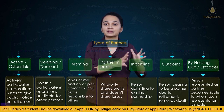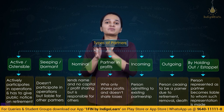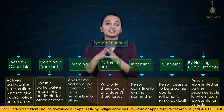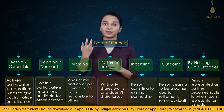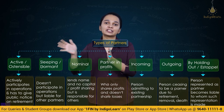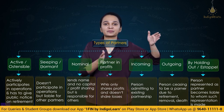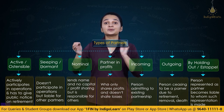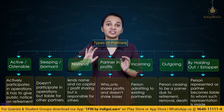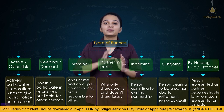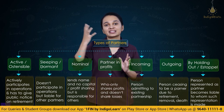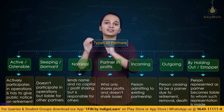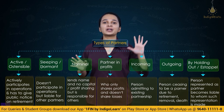A partner in profits only shares profits but not losses and is not liable for losses. An incoming partner joins an existing firm and is not liable for acts before joining. An outgoing partner leaves an existing firm and remains liable for all acts until a proper public notice is given. A partner by holding out is a person who represents himself, or knowingly permits someone to represent him, as a partner — he becomes liable to any third person who acts on that representation.